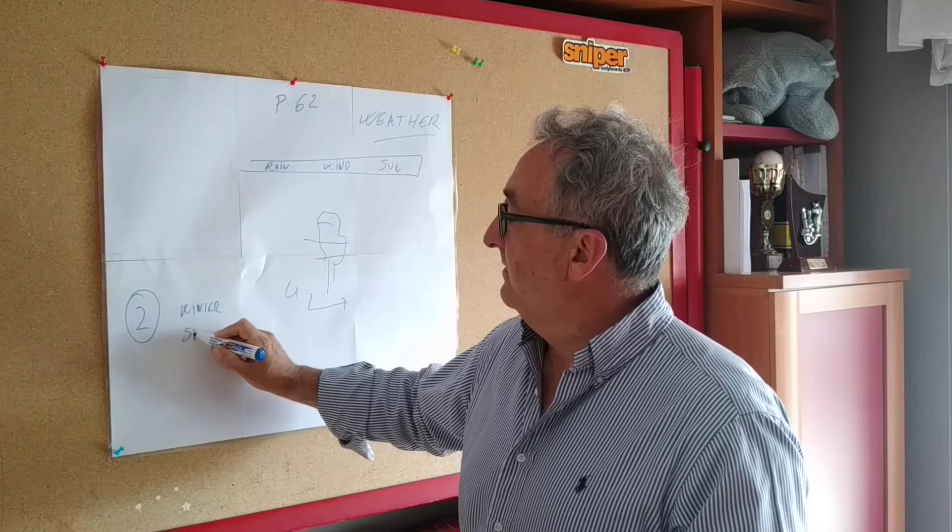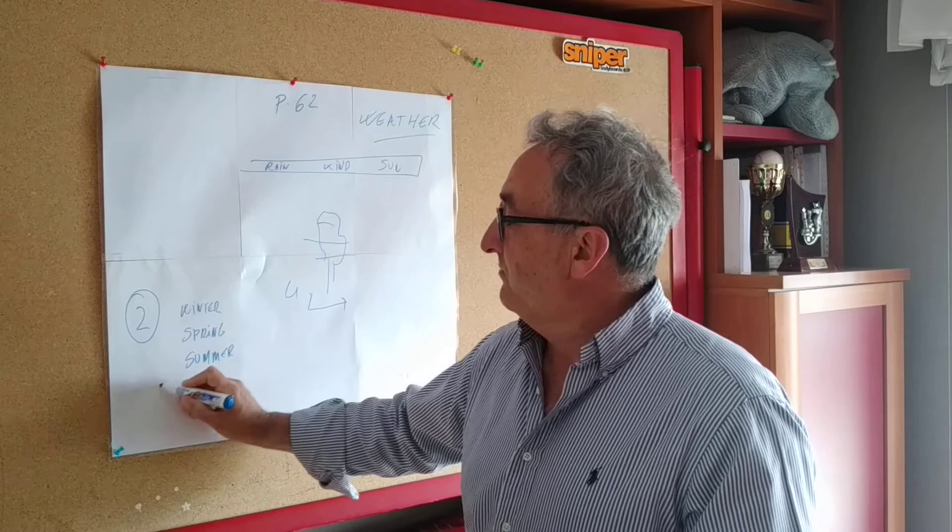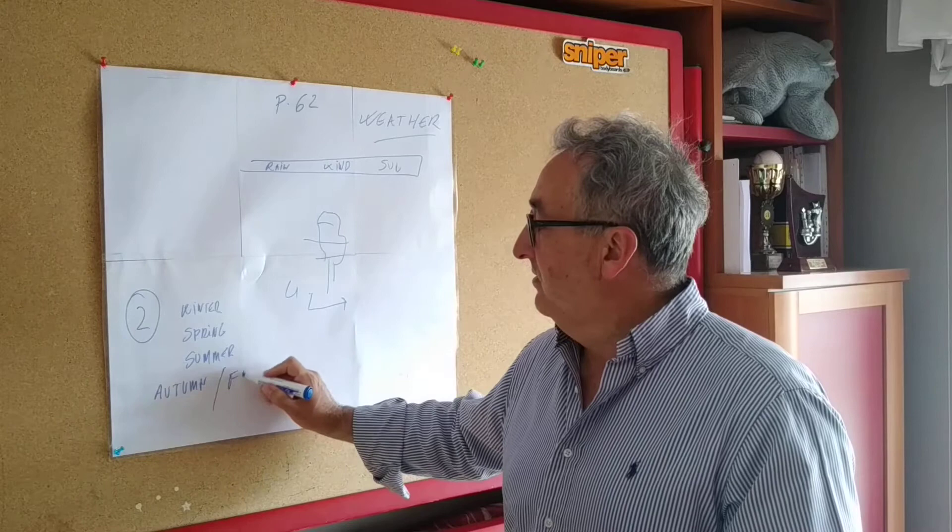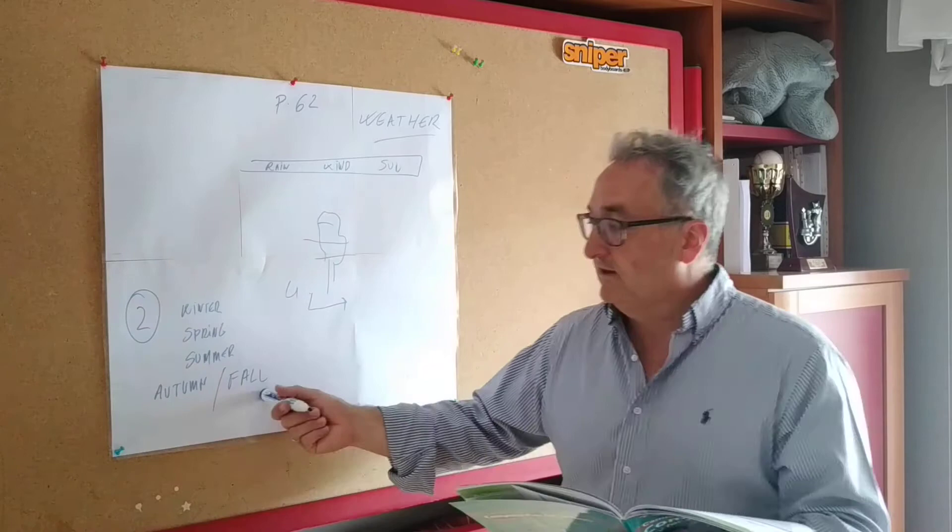Winter. Spring. Summer. And you can write autumn, the British way, or you can write fall, like the Americans. Canadian and the United States, they use fall instead of autumn.